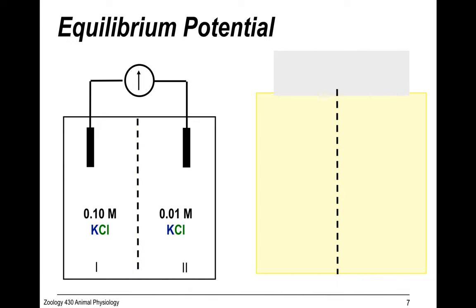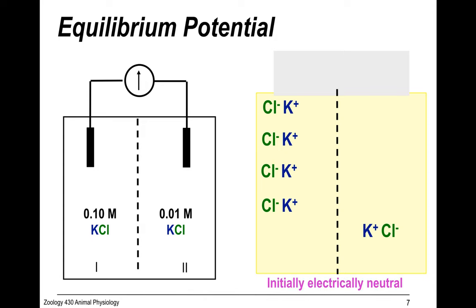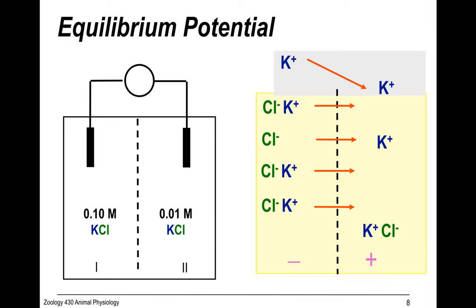If we change the potassium chloride concentration on the two sides of the semi-permeable membrane, initially it's electrically neutral, but potassium is going to start moving across because the concentrations are unequal — potassium moves to equilibrate the chemical potential. That movement results in more potassium on one side, setting up an electrical gradient. By manipulating the ion concentrations across a semi-permeable membrane, we can set up both a chemical and an electrical gradient.